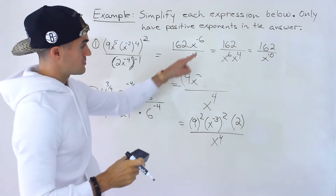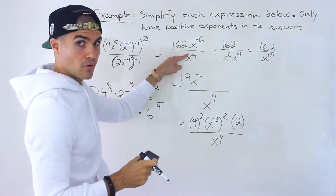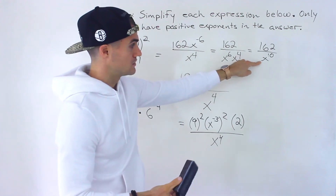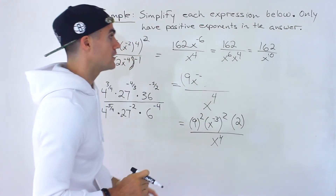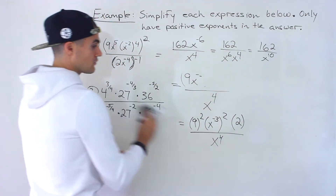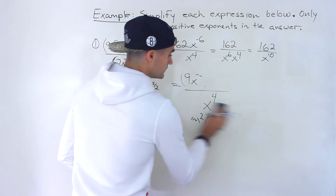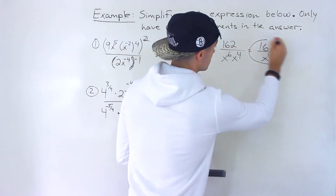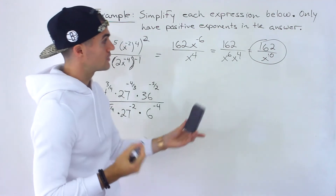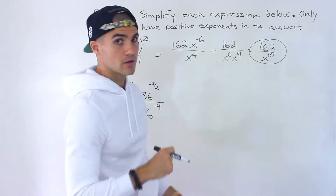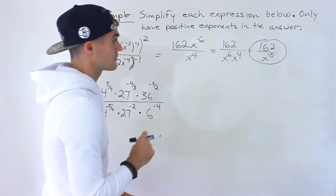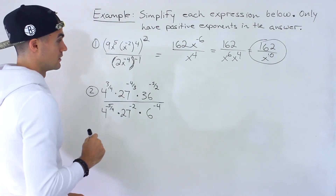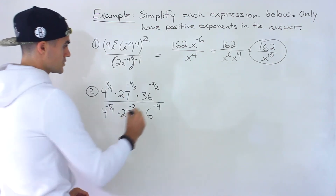From here, x to the negative 6 I would bring down to make it a positive exponent, and then we'd have 162 over x to the 10. You could also subtract — negative 6 minus 4 gives you negative 10, then bring that down to make it positive. Either way, the final answer is 162 over x to the 10. Notice we have a positive exponent in the answer and there's no other way to simplify that.